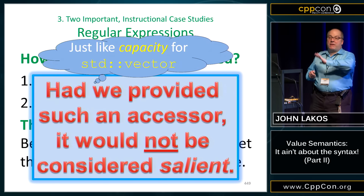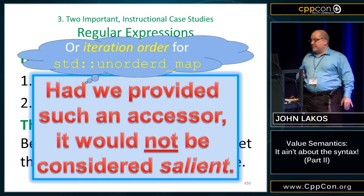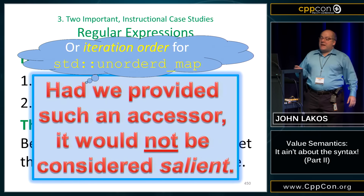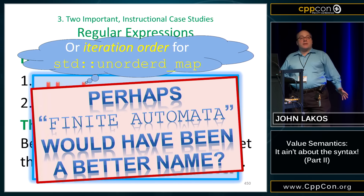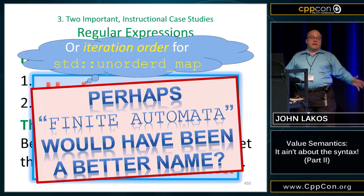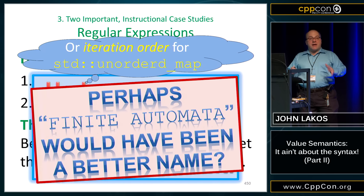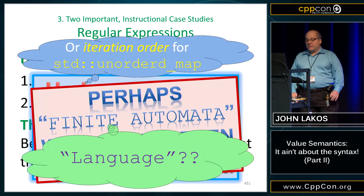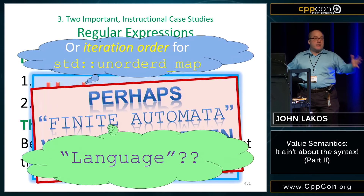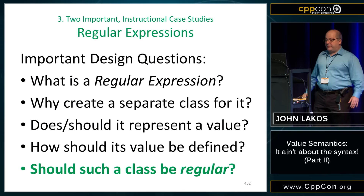If we'd provided an accessor, we wouldn't consider it salient. The bottom line is the string is just a means to get the machine configured. Once it's configured, no one cares. It's the same as iteration order in a map. Finite automata might have been a better name for this, but we called it regular expression. A finite automata is a variable for a finite automata value — or perhaps we should have called it regular language.